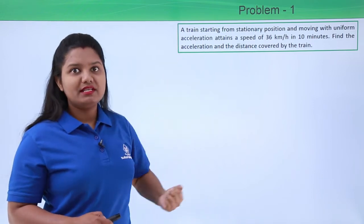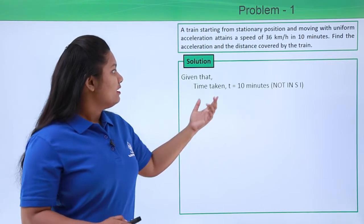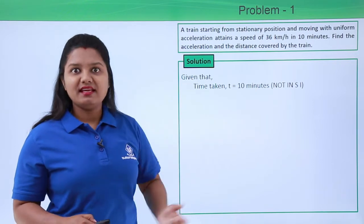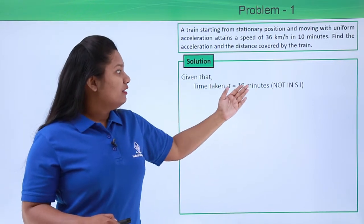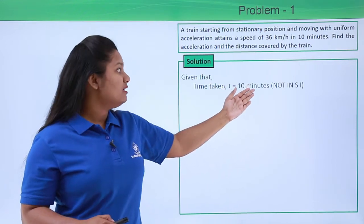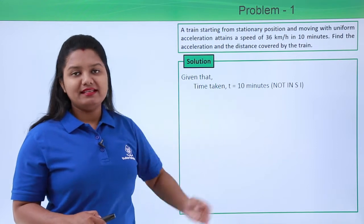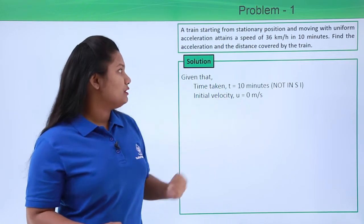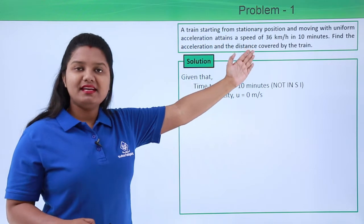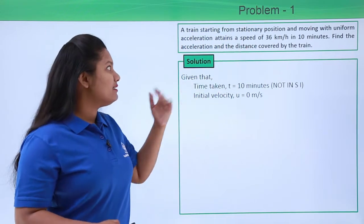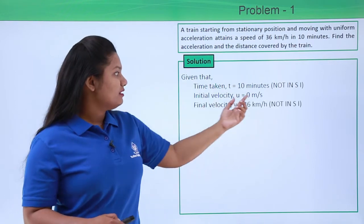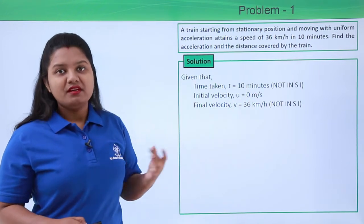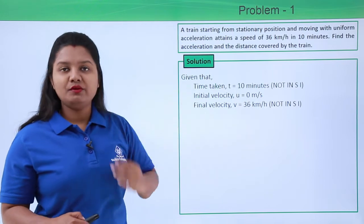Let us note down whatever is given in the question. The time taken by the train is 10 minutes. Now, minutes is not the SI unit of time, so we need to convert this to SI units — that is, seconds. The initial velocity is 0 meters per second, and the final velocity attained at the end of 10 minutes is 36 kilometers per hour. Again, kilometers per hour is not an SI unit, so we need to convert it to SI units before proceeding.